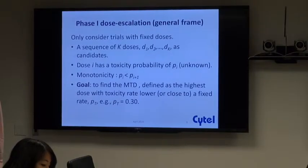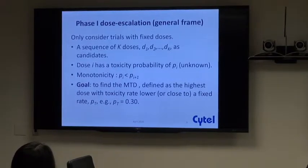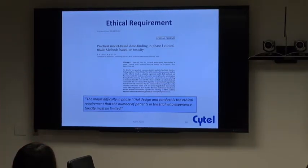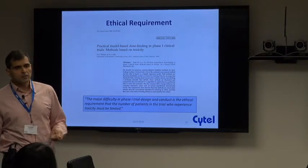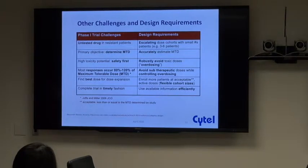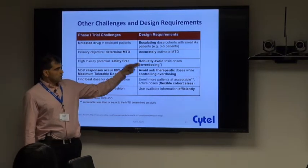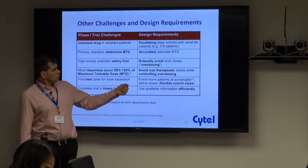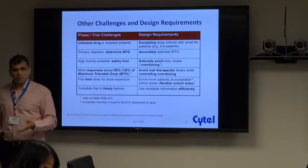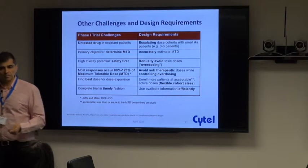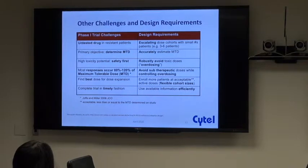Typically the target is something in the order of 30 to 33 percent, or you can define an interval between roughly 25 and 35 percent. There are different requirements that lead to the need for these methods — some ethical, some operational. Key ones include the need to avoid overdosing subjects with systematically toxic doses, also avoiding sub-therapeutic doses, enrolling as many subjects as possible at acceptable dose ranges, and most importantly, trying to use all available information efficiently — not wasting any information.